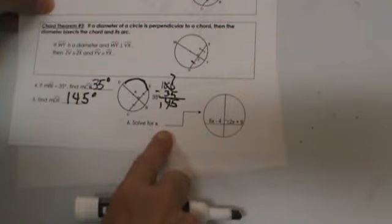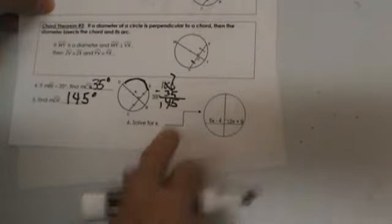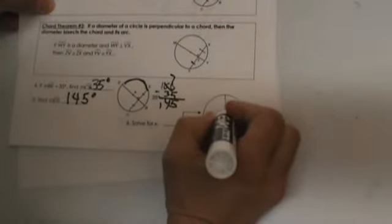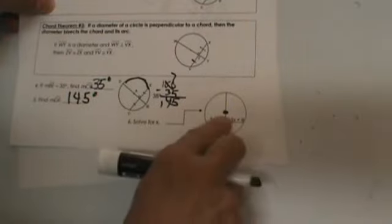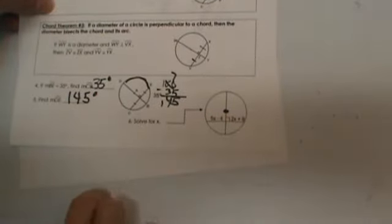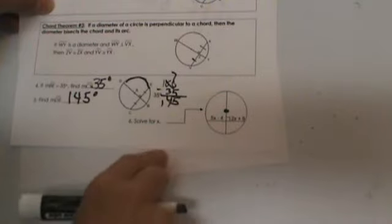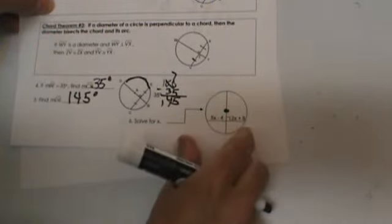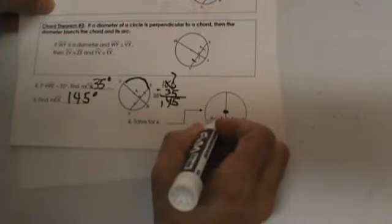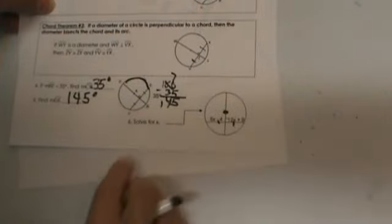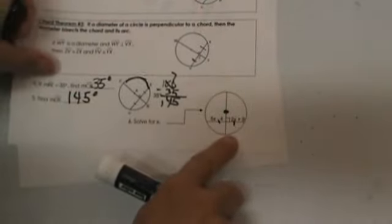Let's look at this last picture. Solve for X. We do need one more piece of information here. We need to know that that goes through the center of the circle. If it goes through the center and it's perpendicular, what do we know about this chord? This chord right here is bisected. So these segments are going to be equal. So what algebraic expression can we set up?